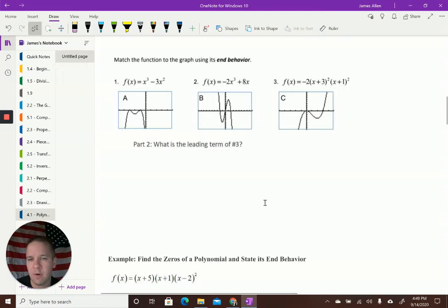So this next example here has couple parts. We're going to match the graph using the end behavior, and then we're going to do a little extra math down here about the leading term of number 3. So let's see here. I have a positive cubic function, and we know that looks like the S, and it's ending up to the right. So positive, it's going up and to the right. This would be letter C here.